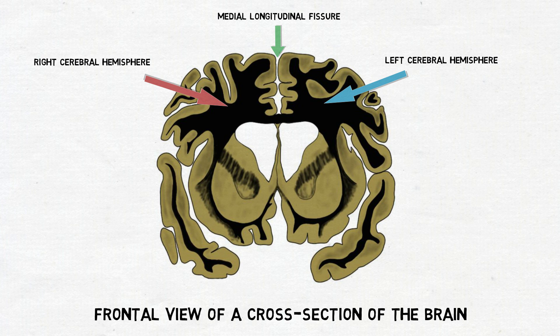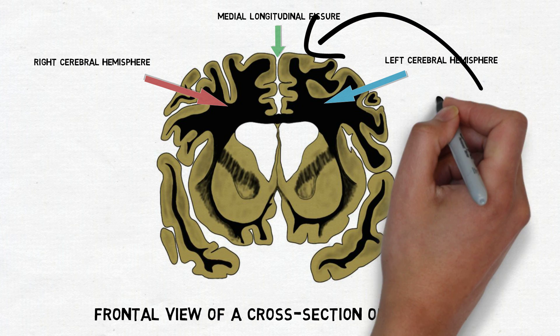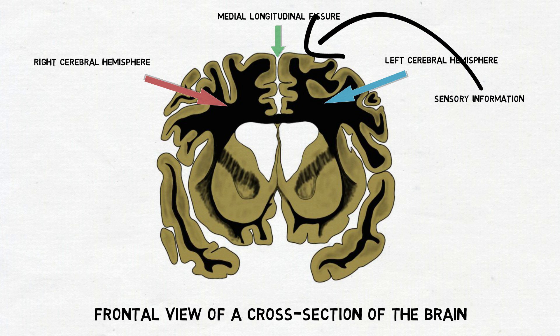The importance of this communication can be seen with the processing of sensory information, which is typically received first in one hemisphere and then must be shared with the other hemisphere. When you type on your keyboard, for example, information about the feel of the keys is sent up from your right hand to the primary somatosensory cortex on the left side of your brain. That information must then be shared with the right side of your brain as well.